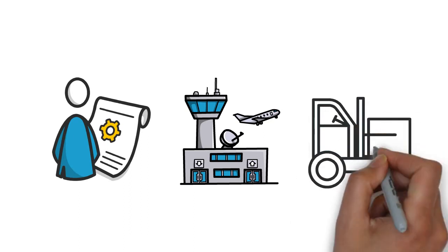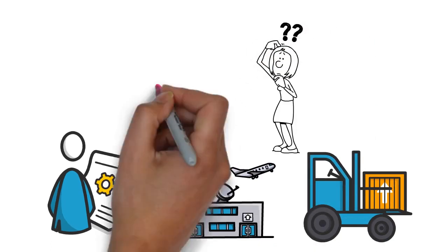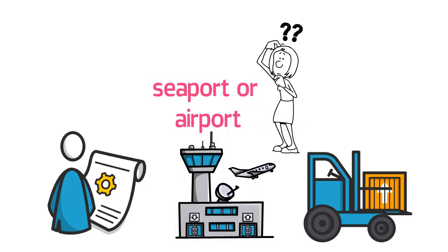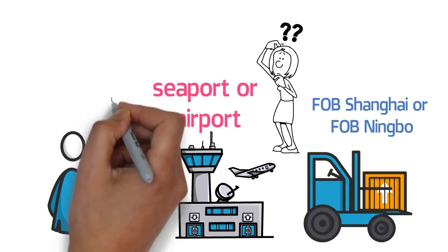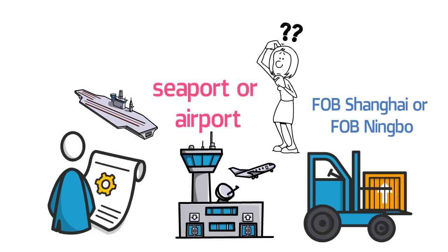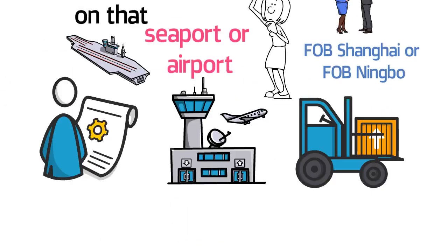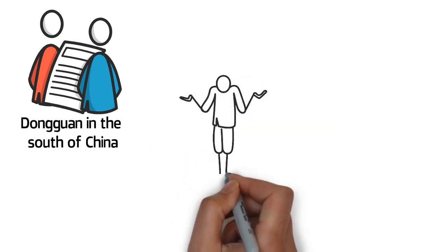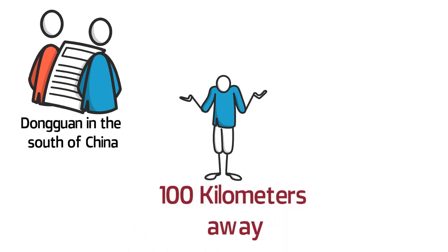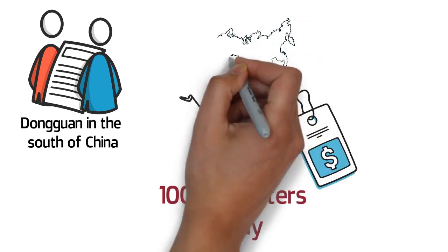FOB is short for free on board. If the supplier quotes a FOB price, it includes: costs for sending the product to the vessel at your appointed seaport; costs for sending the products on an aircraft at your appointed airport; and costs caused during the importing and exporting process. FOB prices are based on a specific seaport or airport — for example, FOB Shanghai or FOB Ningbo. You should have a preferred port of shipment. You can ask a supplier if you don't know the shipping port, and they will tell you where their closest seaport is.